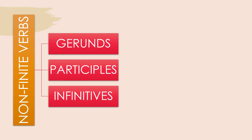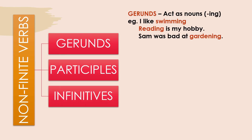Non-finite verbs are of three types: gerunds, participles, and infinitives. Gerunds act as nouns — they are -ing words. For example, in 'I like swimming,' the action word is 'like,' but I like something — swimming. Swimming is an -ing word acting as a noun, therefore it is a gerund. Reading is my hobby — again an -ing noun, which is a gerund. Sam was bad at gardening — 'gardening' is again a gerund.